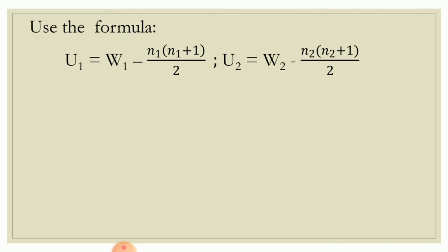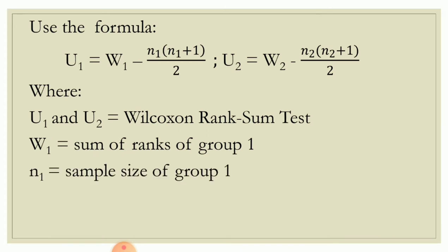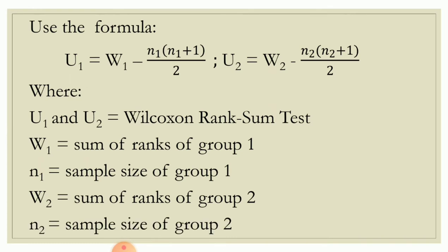For group 2, U sub 2 is equal to W sub 2 minus N sub 2 times the quantity N sub 2 plus 1, all over 2. Where U sub 1 and U sub 2 are the Wilcoxon rank sum test statistics, W sub 1 is the sum of ranks of group 1, N sub 1 is the sample size of group 1, W sub 2 is the sum of ranks of group 2, and N sub 2 is the sample size of group 2.